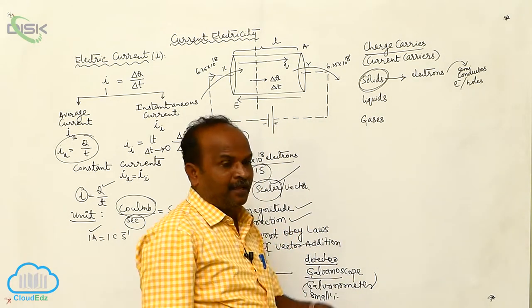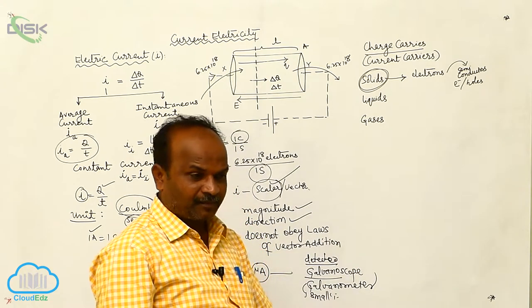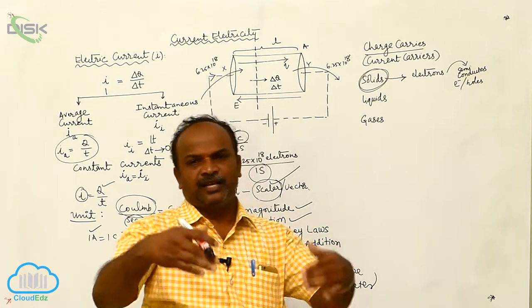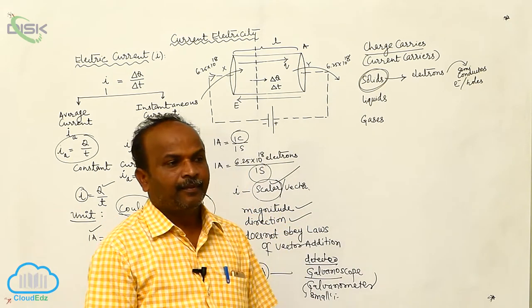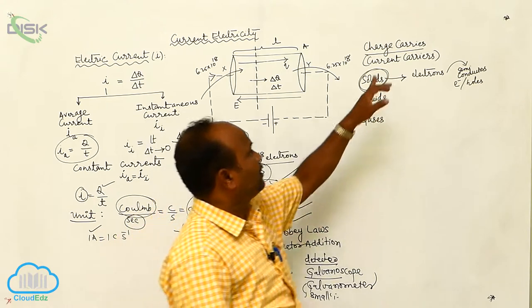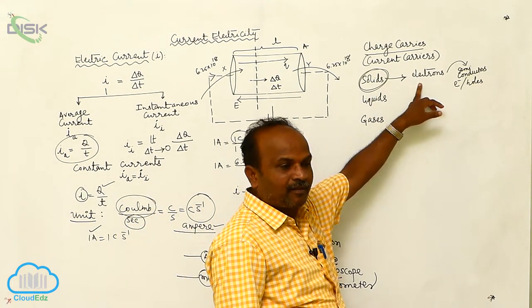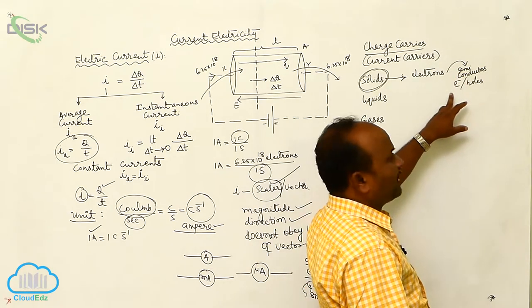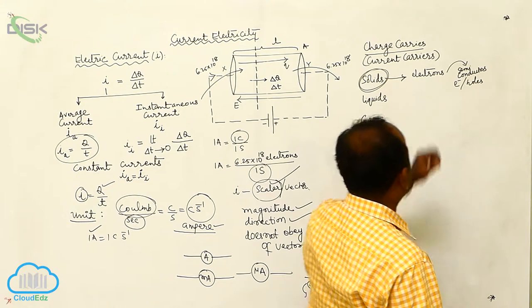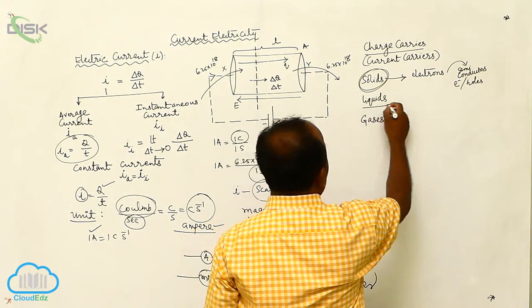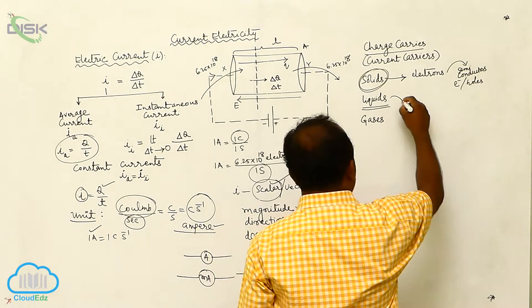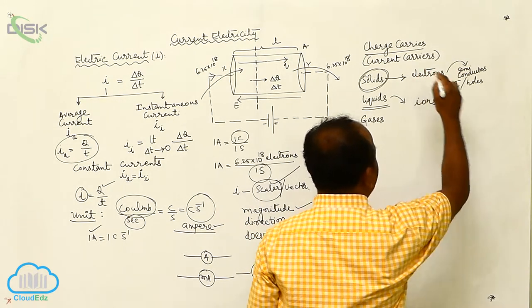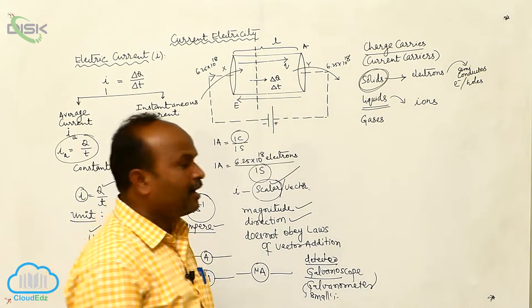In solids, conductors, semiconductors, and insulators are there. In insulators, there is no current. In conductors, the current is due to the free electrons. In semiconductors, the current is due to electrons as well as holes. In liquids, the current is due to the ions.